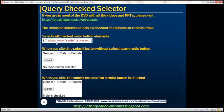Look at the selector we have here. This is going to select all input elements of type equals radio. The colon checked selector at the end is going to ensure that it only selects those radio buttons that are checked. Let's understand this with an example.